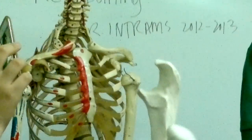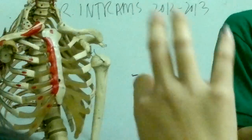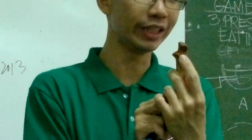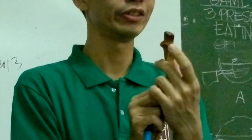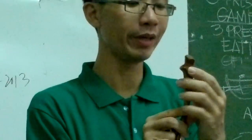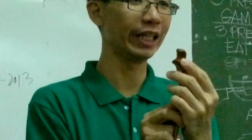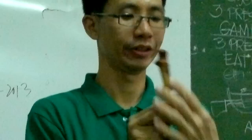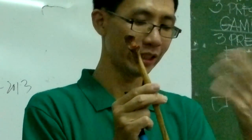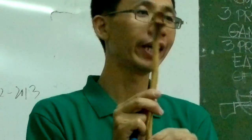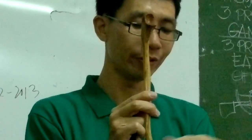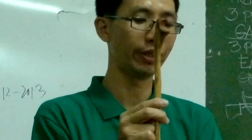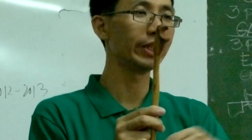Next, where is the lateral? Here, wherever is your radial notch — that would now be more facing lateral. That notch is the lateral notch, and it's more towards the lateral.